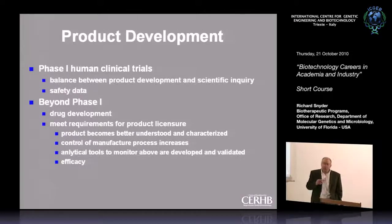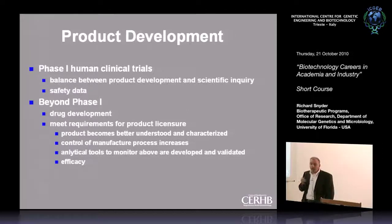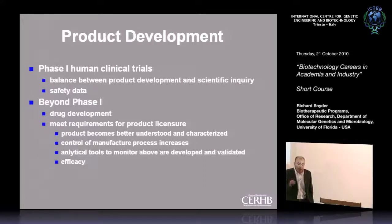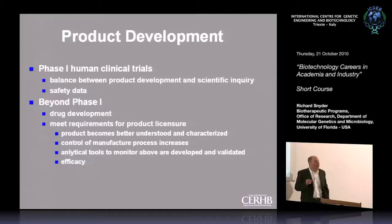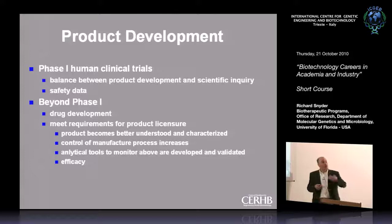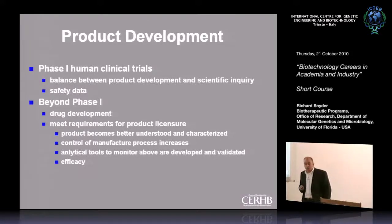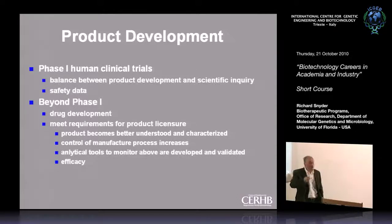In product development, Phase One trials are a balance between product development, scientific inquiry, and generating safety data. Once you're beyond Phase One, you're really in a development mode meeting the requirements for product licensure. The whole goal, at least from a pharmaceutical company's point of view, is to get a license to sell these products. All of the activities are geared toward meeting the requirements for product licensure.